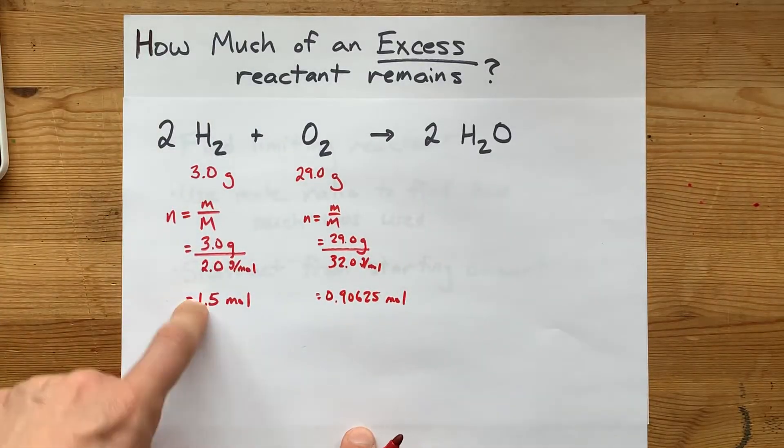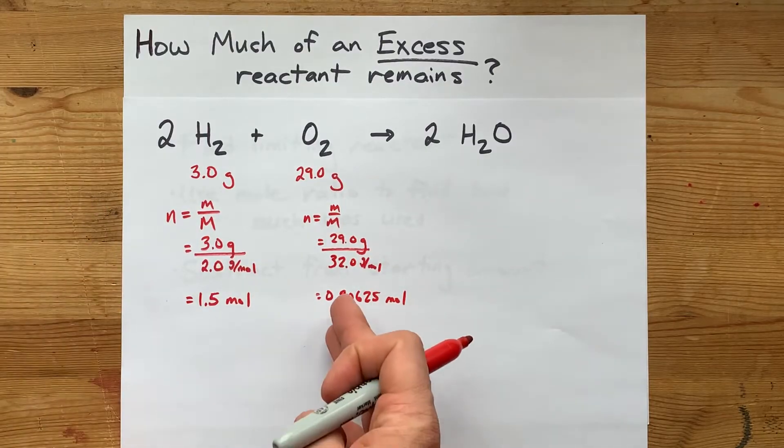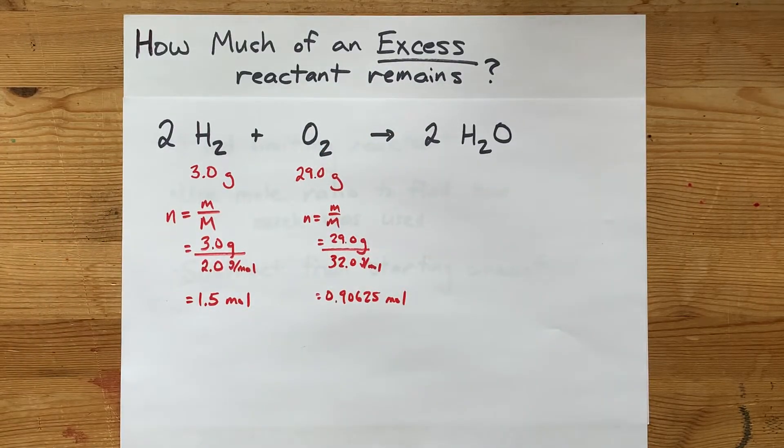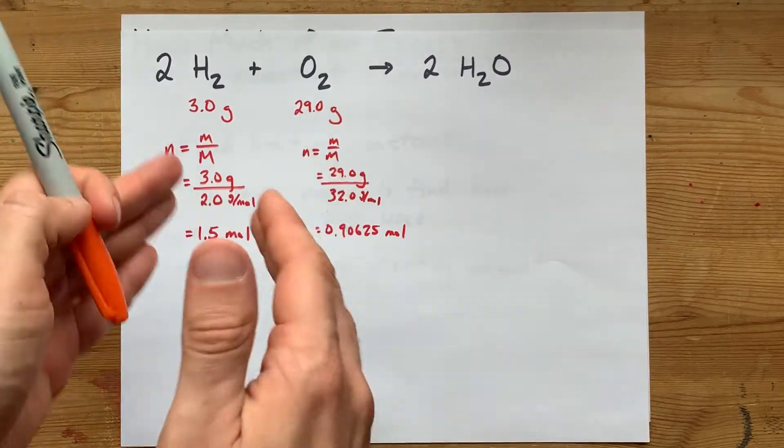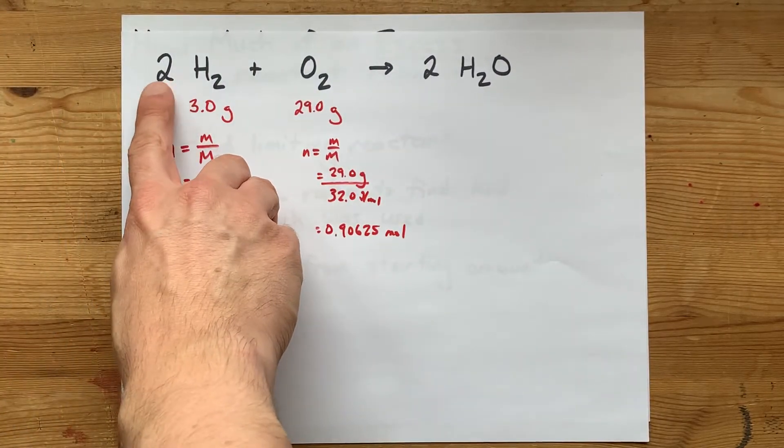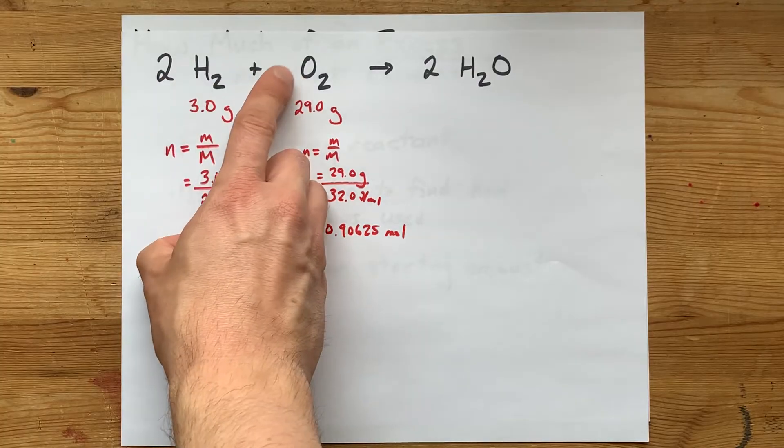All right, 1.5 moles of this, 0.9 of that. It looks to me like we have less O2, but that's not how you find limiting reactant. Limiting reactant tells you which one runs out first. And look, the hydrogen, H2, is consumed twice as fast as the O2.